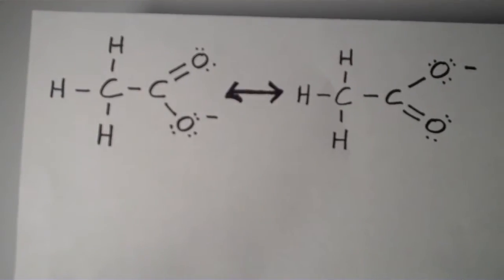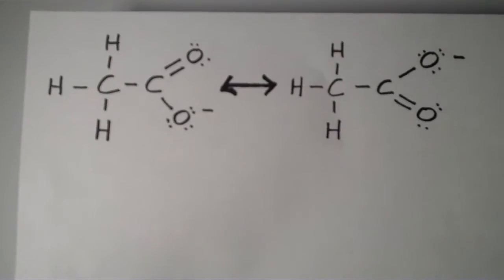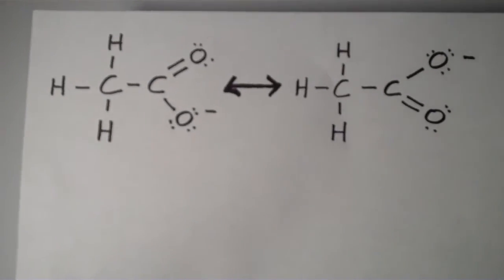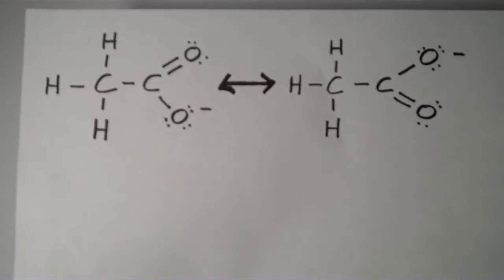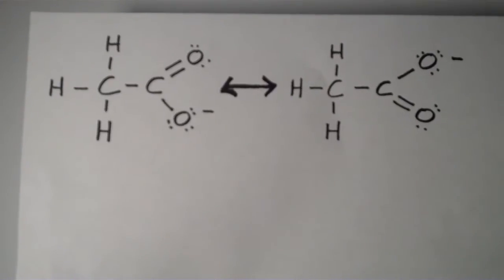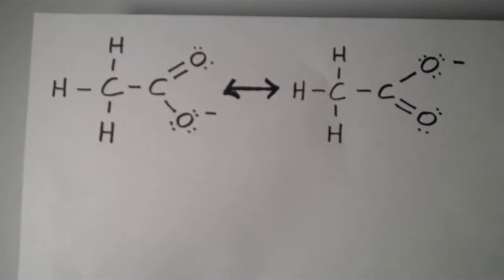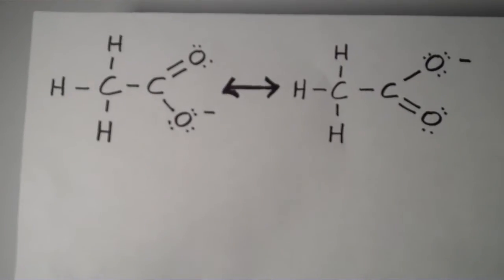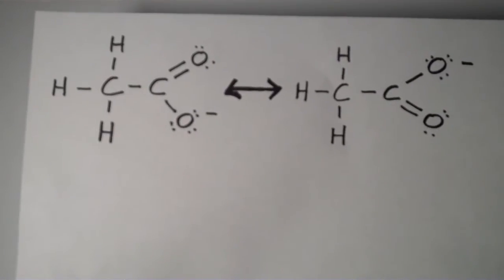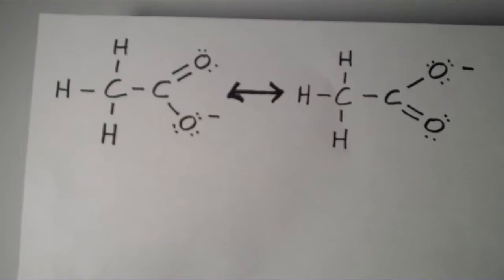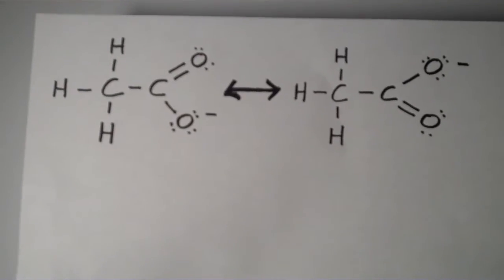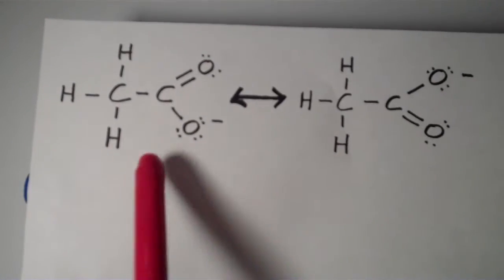So that alone puts quite a bit of restrictions on how many resonance forms you can draw for a particular compound or ion. Furthermore, the total number of electrons and the total charge is the same. You can verify that. If you need to, pause the video and count up all the electrons, and reassure yourself that there's the same number of electrons in both of these structures.